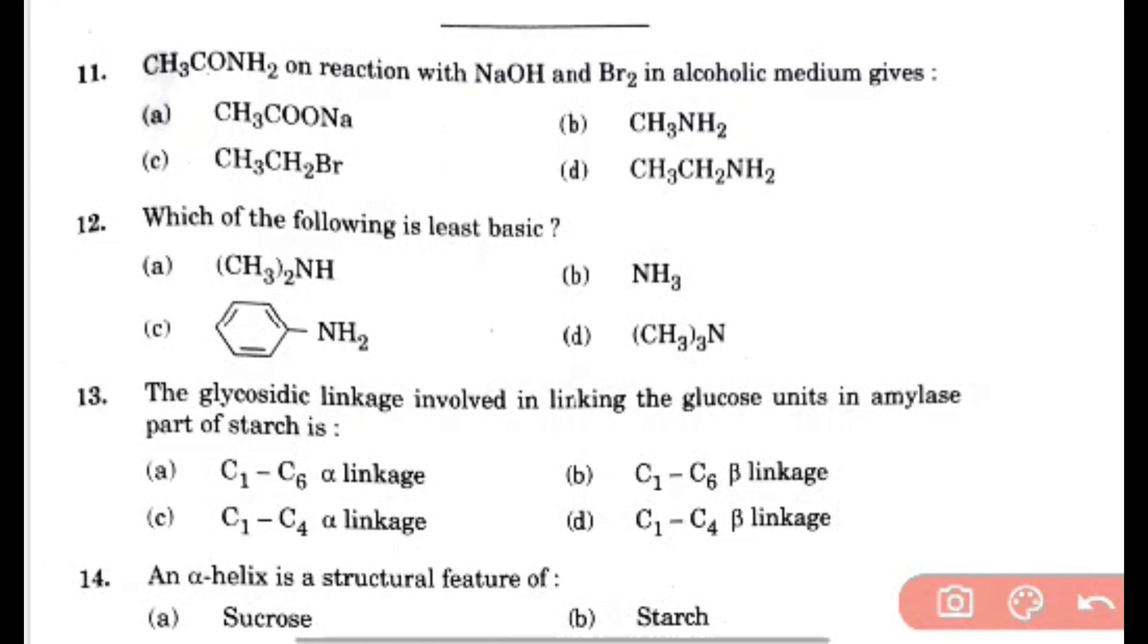The glycosidic linkage involved in linking the glucose unit in amylase part of starch, that is C1-C4 alpha linkage, option C.